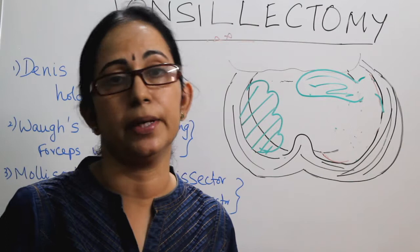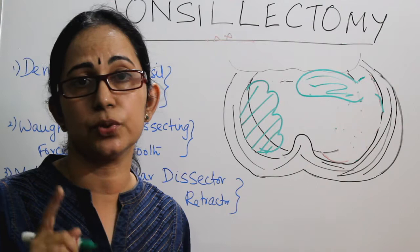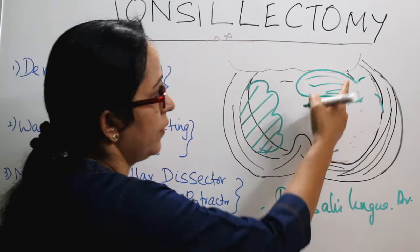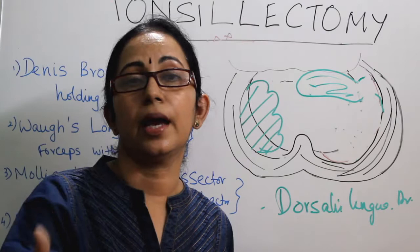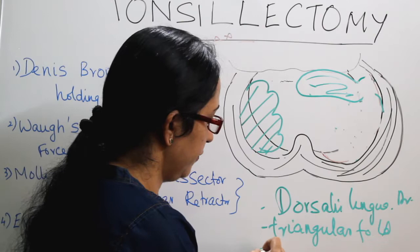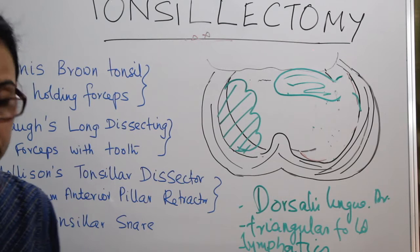An important exam question: what are the structures passing through the lower pedicle of the tonsil, on which you apply the Eve's tonsillar snare? There are three structures: the dorsalis linguae artery (branch of lingual artery), the triangular fold of mucosa — note that at the upper pole there is the semilunar fold, and at the lower pole the triangular fold — and some lymphatics.